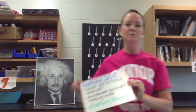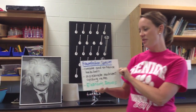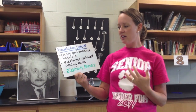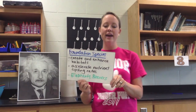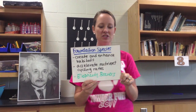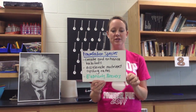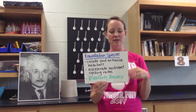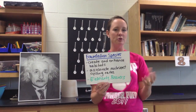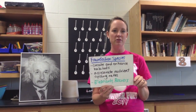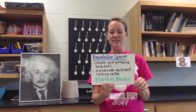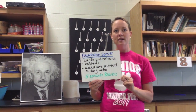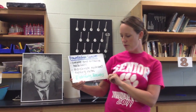A foundation species is a type of keystone species. They play an important role in creating and enhancing a habitat and can also accelerate nutrient cycling rates. An elephant is an example — elephants will push over, break, or uproot trees, creating openings in the grasslands and woodlands in Africa so that organisms like antelopes can eat grasses and other plants that benefit from the removal of trees. Beavers would be another example — they build dams, which creates ponds and wetlands, almost creating a new habitat for other organisms.